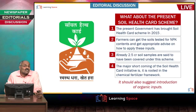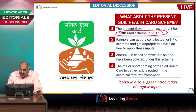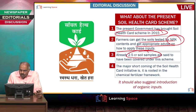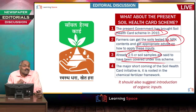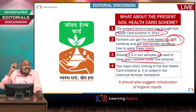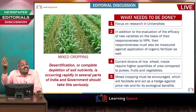What about the present soil health card scheme? The government introduced it in 2015, allowing farmers to get soils tested for NPK and receive appropriate advice on how to apply inputs. Already 2.5 crore soil samples have been tested. However, a major shortcoming is that the scheme is linked with chemical fertilizers but not with organic fertilizers. The author says there is a need to link the soil health card scheme with organic fertilizers as well.